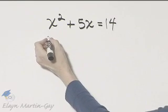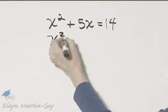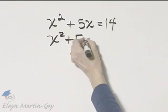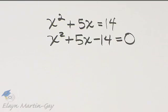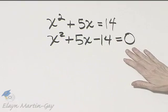So I will subtract 14 from both sides, and when I do so, I'll have x squared plus 5x minus 14 is equal to 0. Once it's in standard form...